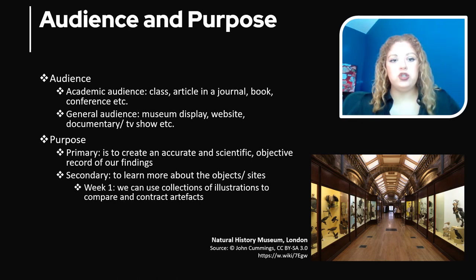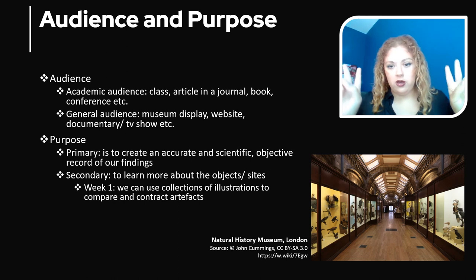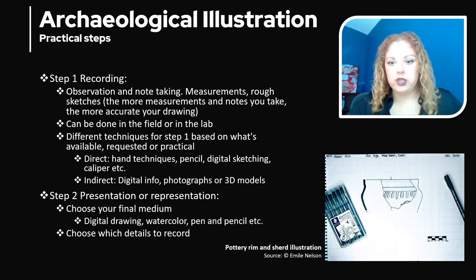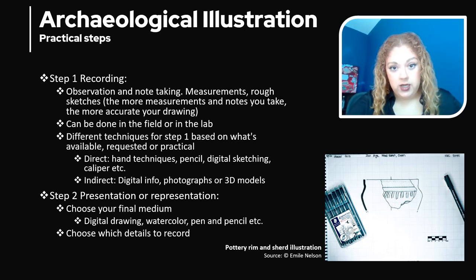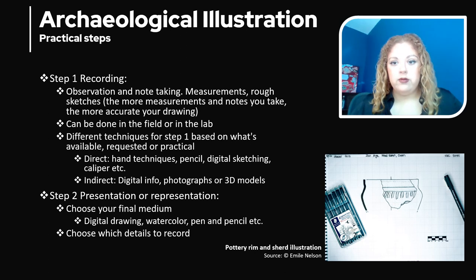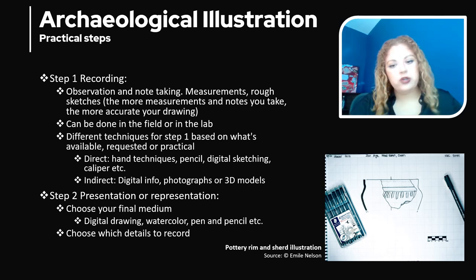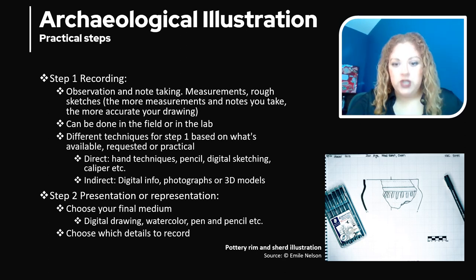There are two main steps to creating a valuable, good illustration. Step one is recording — this is observation and note-taking, taking measurements, and possibly doing some rough sketches. These can be done in the field or in the lab. The more measurements and notes you have, the more accurate your illustration is. It may seem tedious, but sometimes you're not able to finish an illustration in the field or in the lab — you don't have enough time, or something comes up — so taking down these measurements and rough sketches is really helpful for coming back later to finish your illustration.